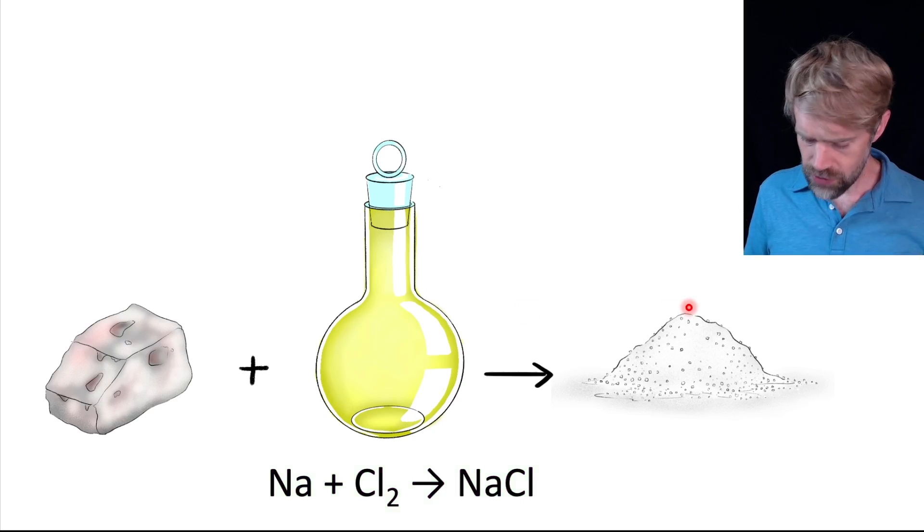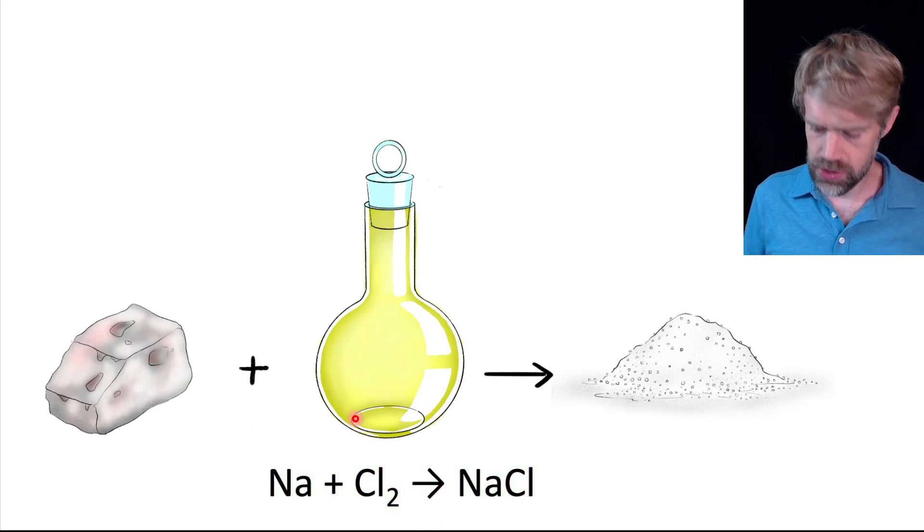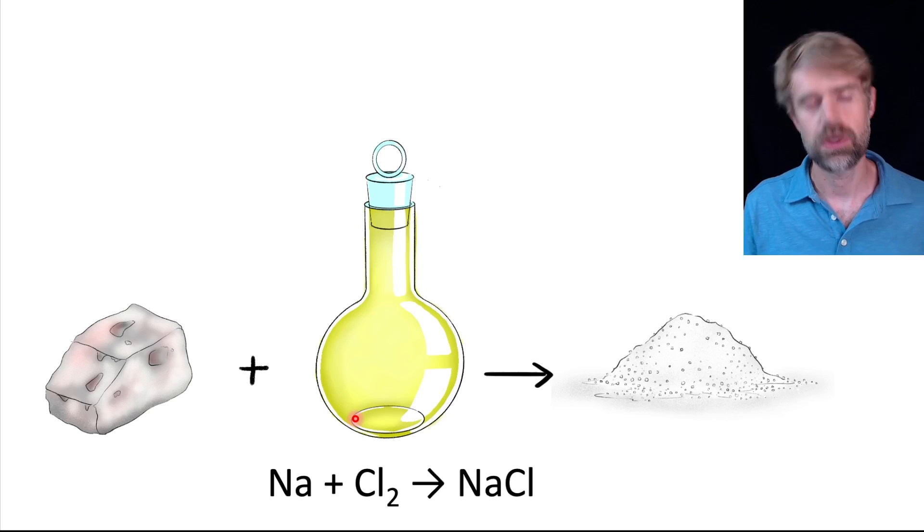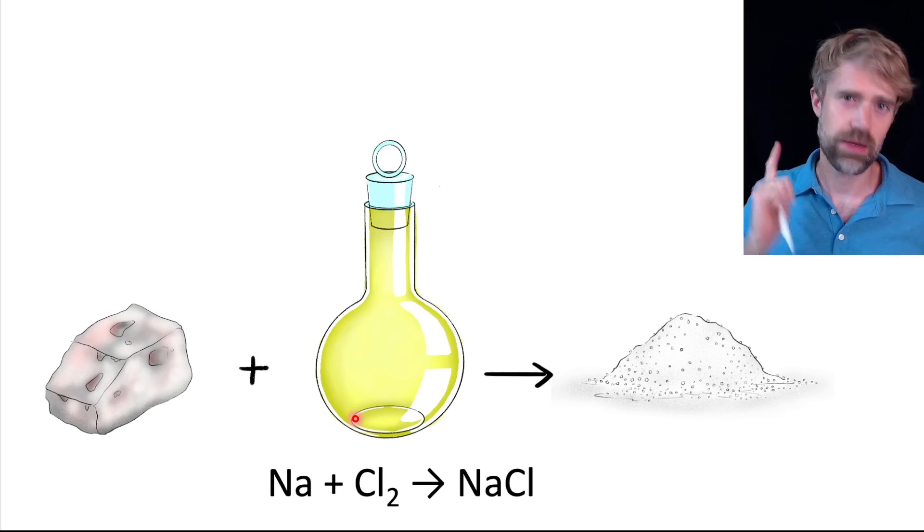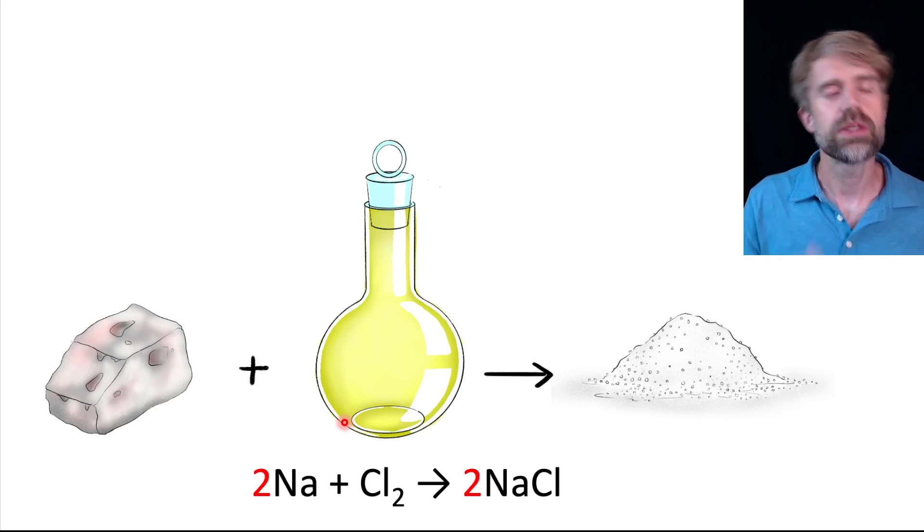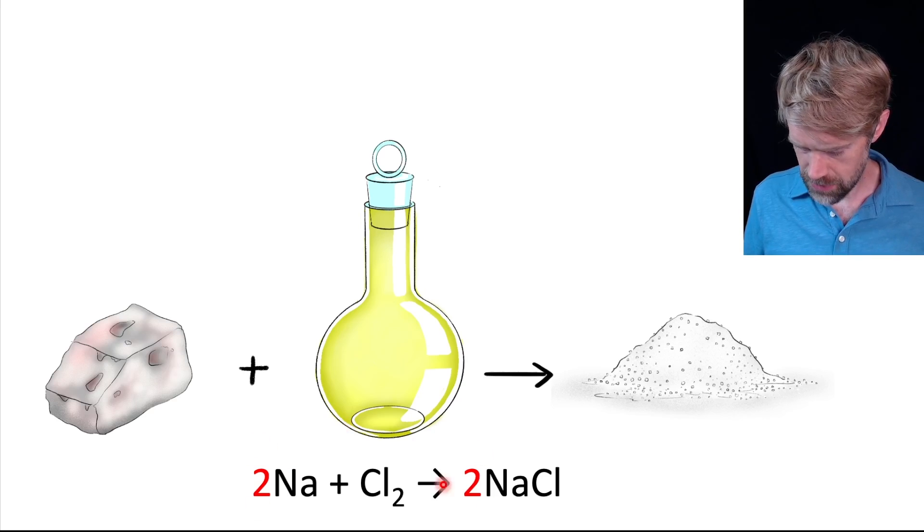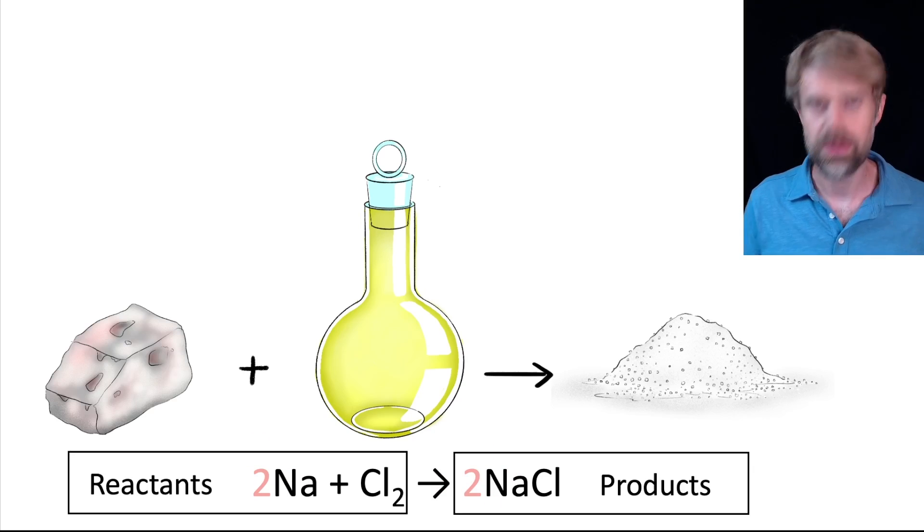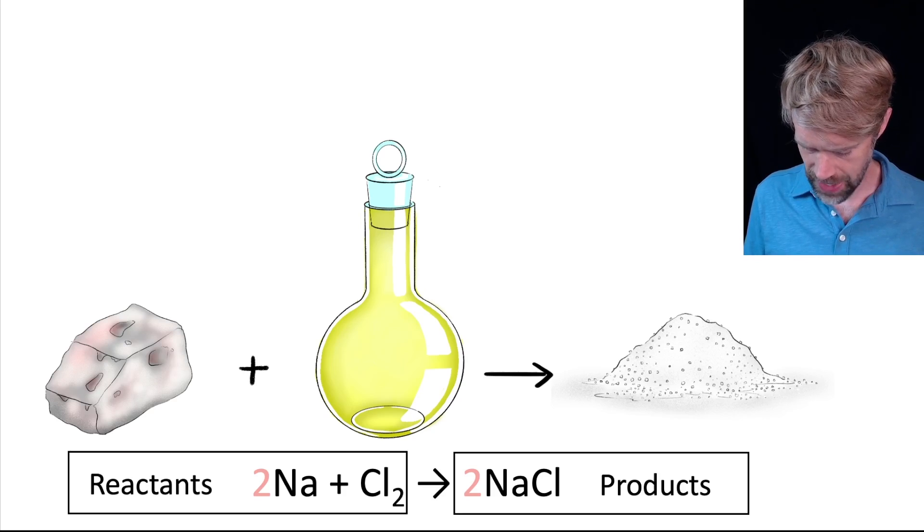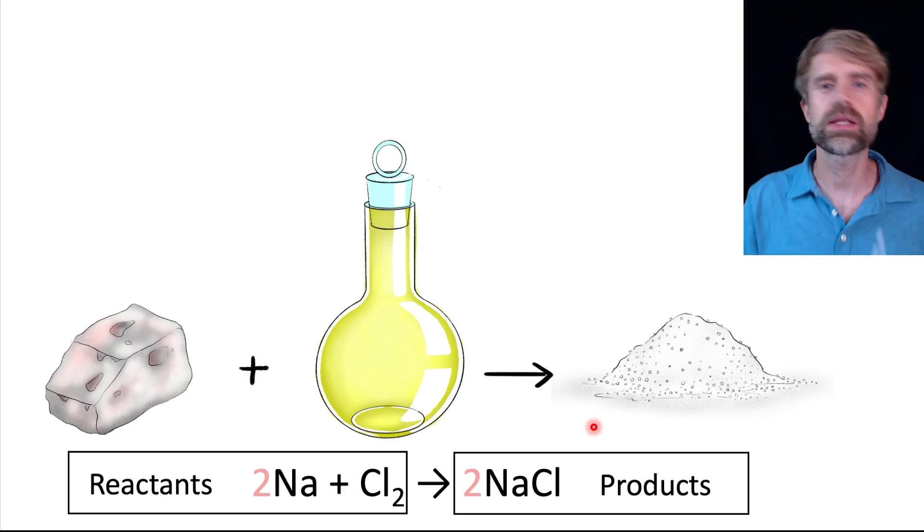Now, the way we've written this chemical equation isn't perfectly accurate. To be perfect, we need to add some numbers here. These numbers are added to do something called balancing the equation. I have a whole other video on just that. But we don't need to worry about this right now. In this video, you'll sometimes see numbers like this. Just ignore them. And focus instead on the formulas for the reactants and the products. Let's look at some more examples.